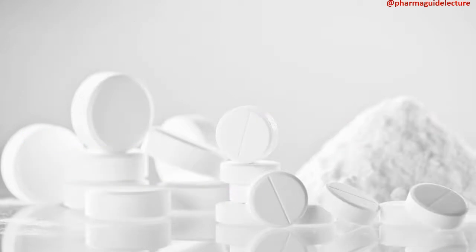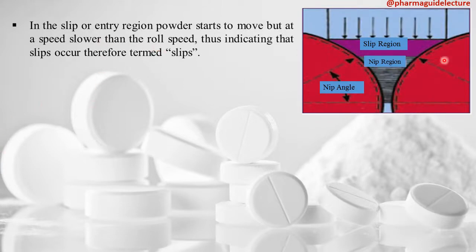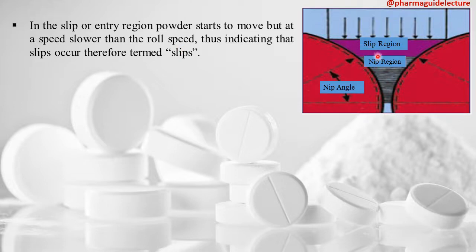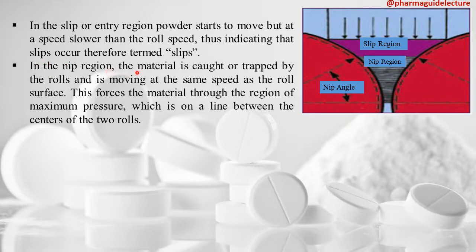In the slip or entry region, powder starts to move at a speed slower than the roller speed, and slippage occurs — hence it is called the slip region. In the nip region, the material is caught by the rolls and moves at the same speed as the roll surface, forcing the material through the region of maximum pressure.